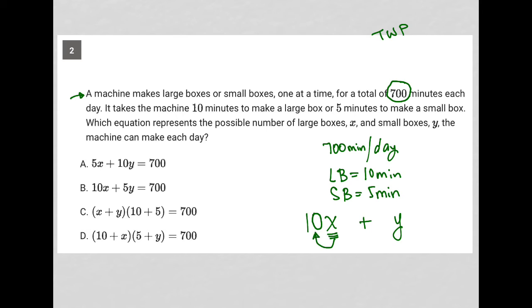We have X times 10 minutes will give us the total time it takes to make all of the large boxes. But multiply Y times 5. The number of small boxes Y times 5 minutes per box will tell us the amount of time it takes to make all of the small boxes.